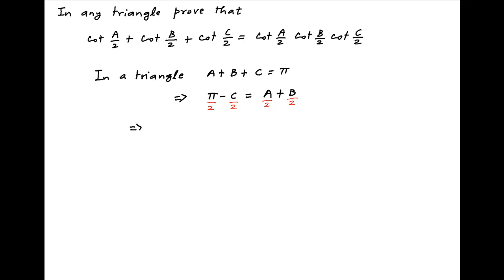So we have on the left hand side tan of pi upon 2 minus C upon 2. This is equal to tan of A upon 2 plus B upon 2.